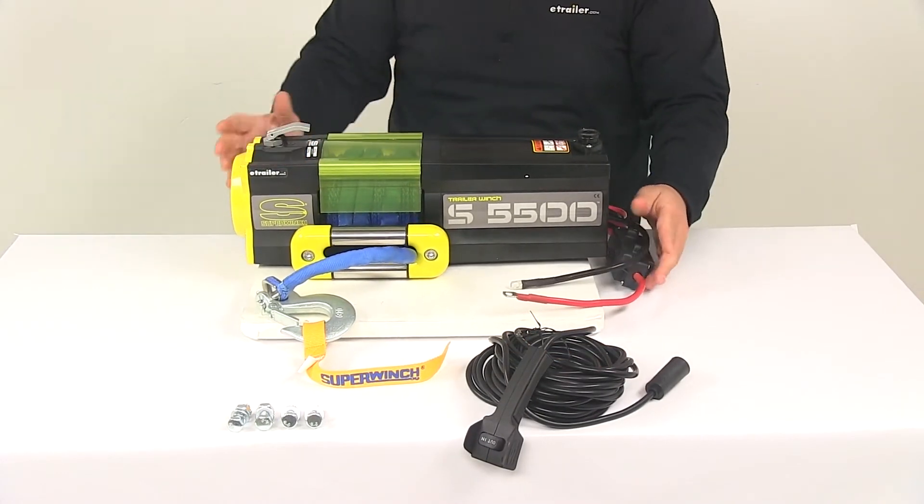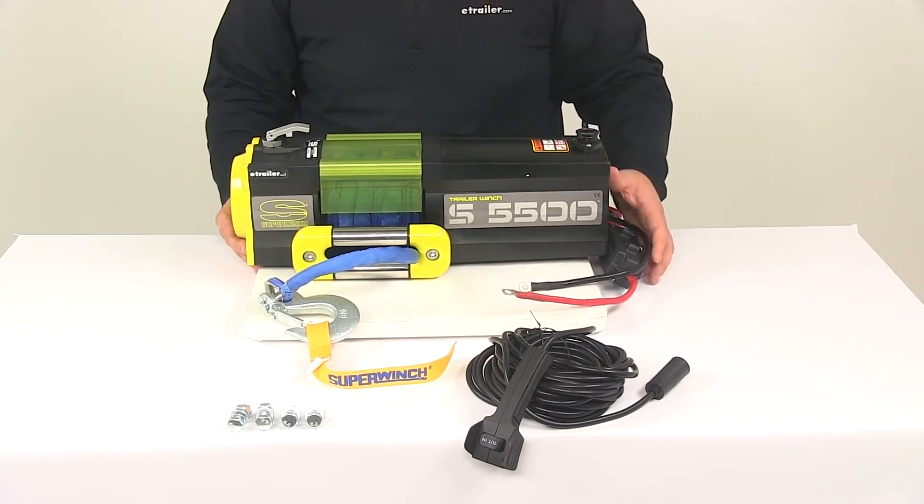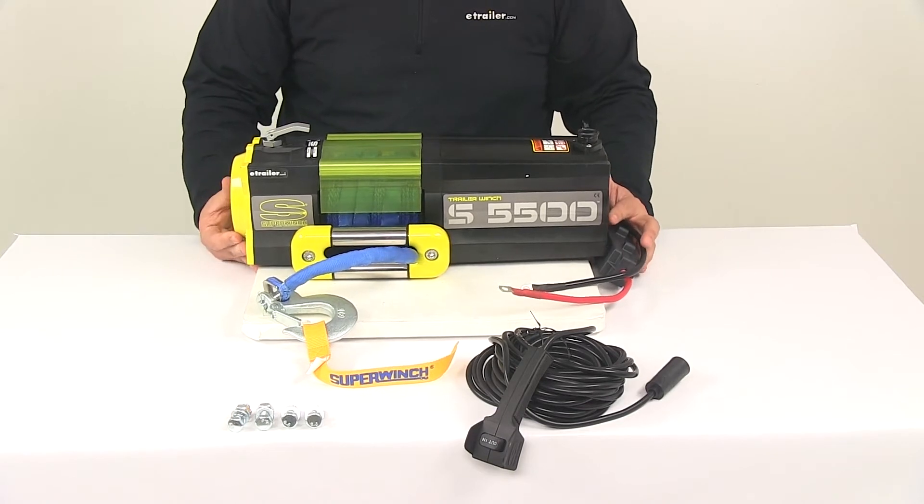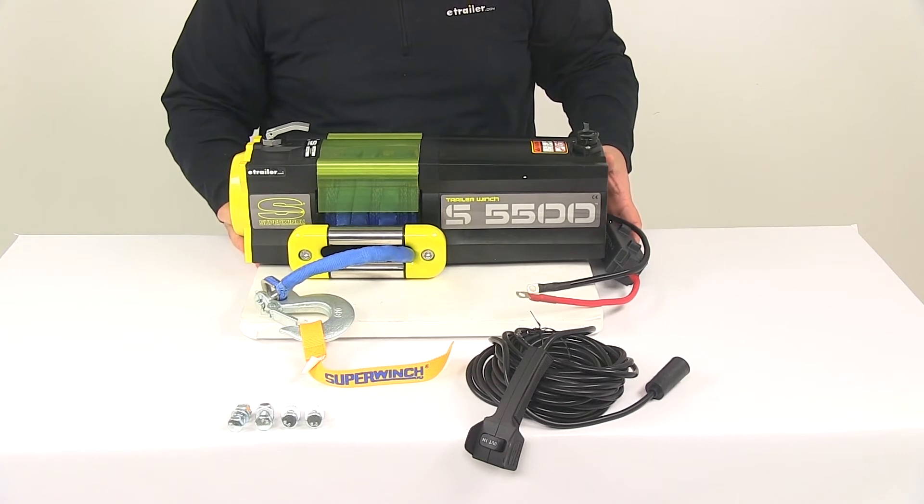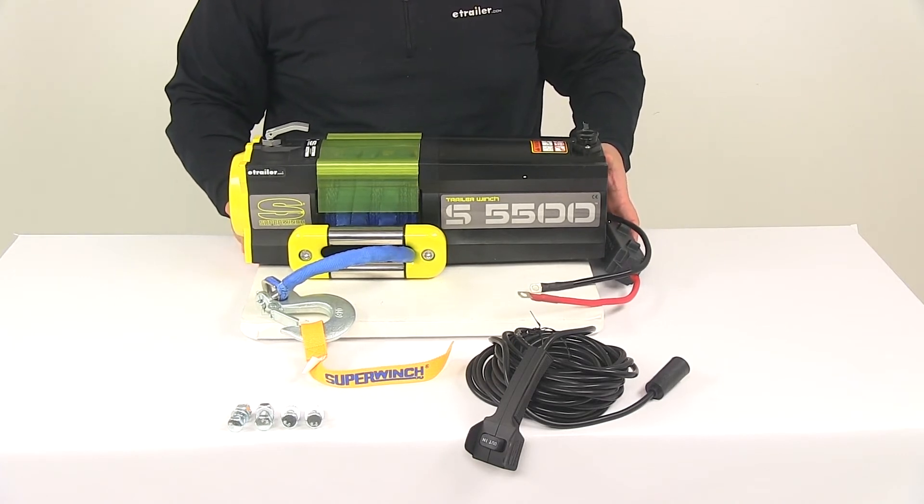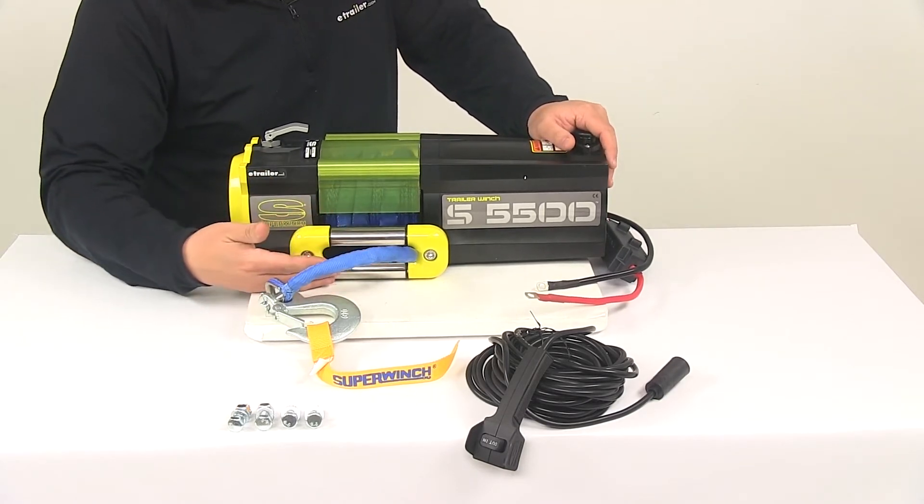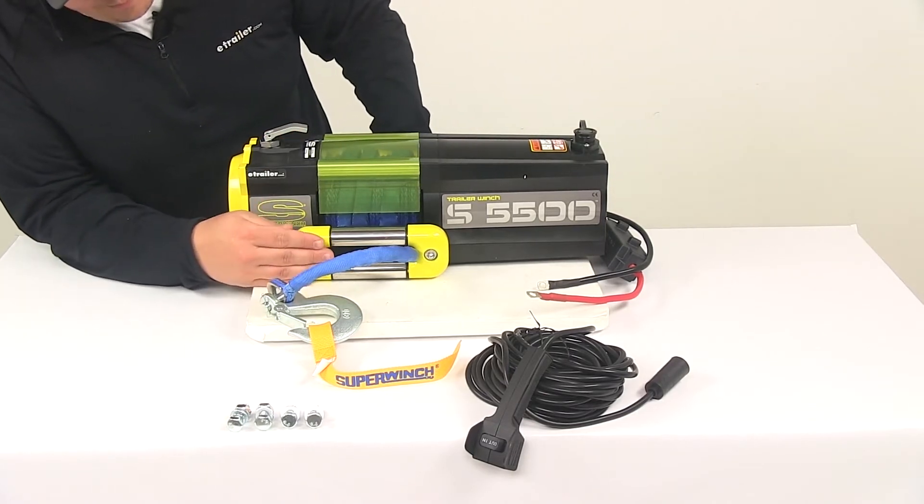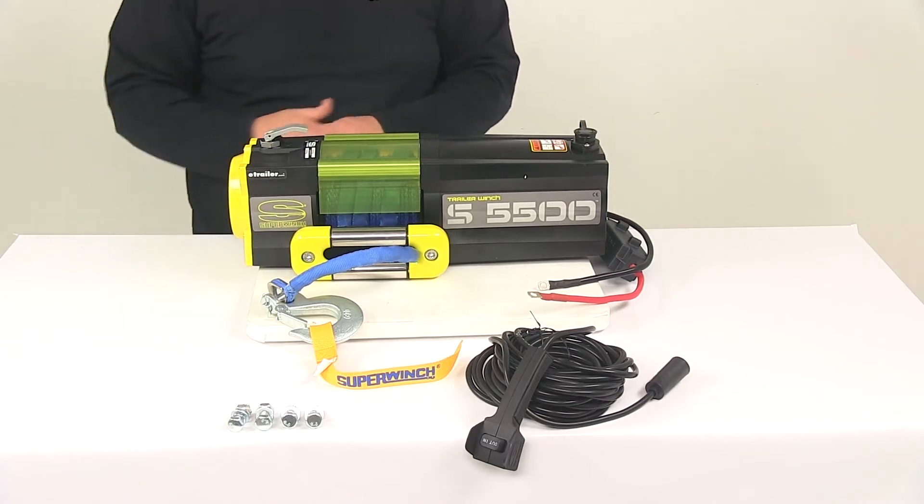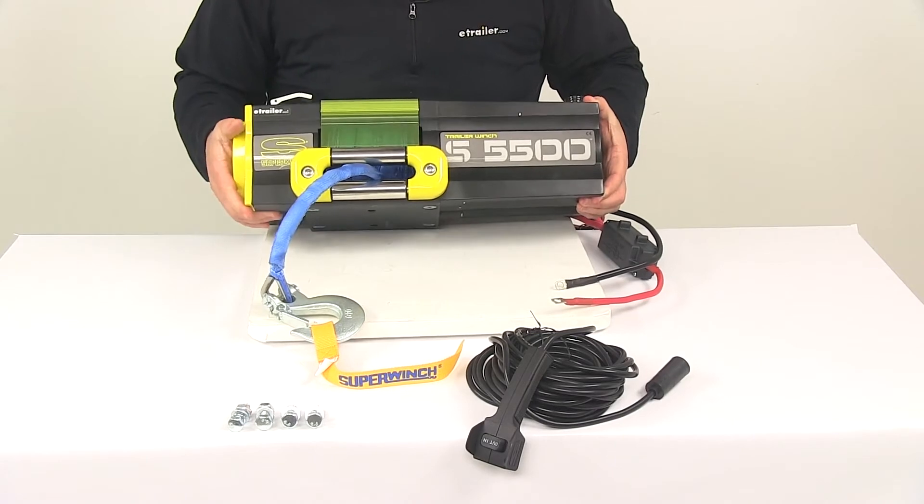When it comes to installation of the winch onto a mounting surface, again this is a trailer winch—it's not meant for automotive applications, trailer use only. The installation is simple. It comes with the mounting hardware as you can see laid out right here, and it has the base plate which the winch is already mounted to as well as the fairlead. I'm going to flip this up so you can see the underside of it.